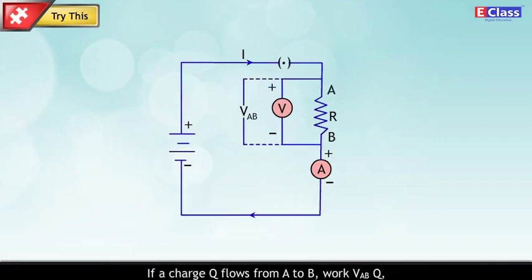If a charge Q flows from A to B, work VAB×Q has been done on Q while going from A to B. Refer to chapter 3 of standard 9.